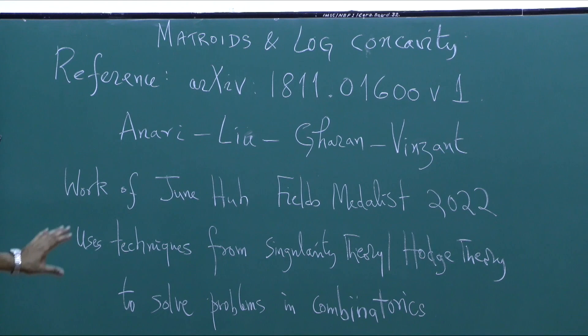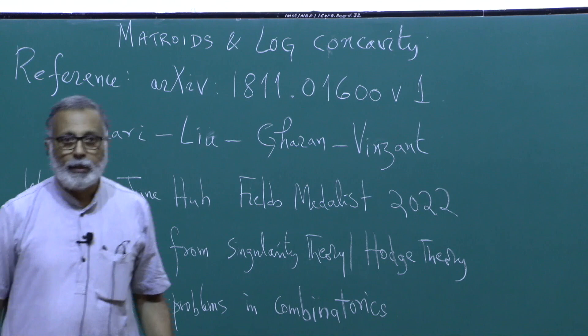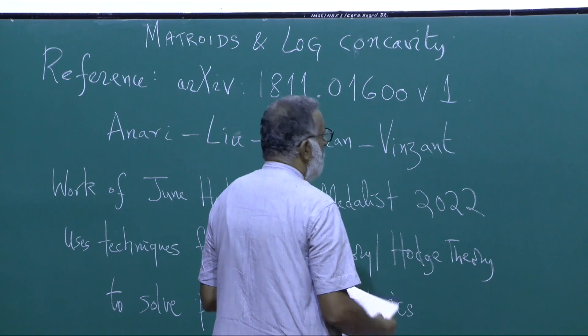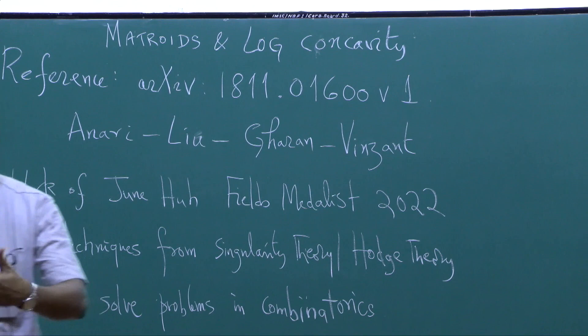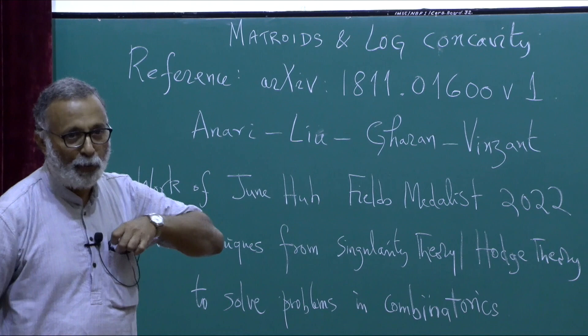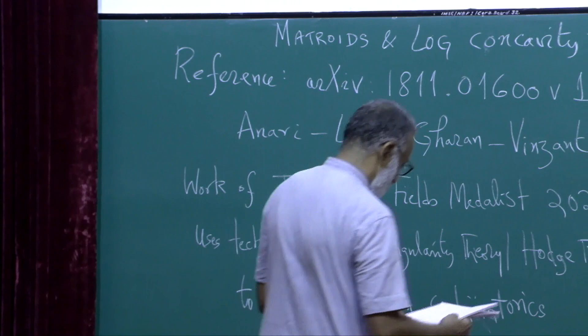That was a fantastic achievement — no wonder he was awarded the Fields Medal. However, the proof we are going to talk about today is very elementary, at the level of second year college mathematics. I am no expert in this subject; I am also trying to read the proof, and we are all equal here. Experience does not help because it is an advanced calculus proof.